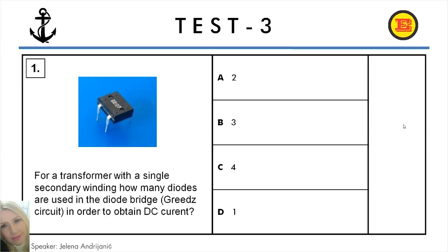Question number 1. For a transformer with a single secondary winding, how many diodes are used in the diode bridge circuit in order to obtain DC current? A: 2, B: 3, C: 4, D: 1. And the correct answer is C: 4.